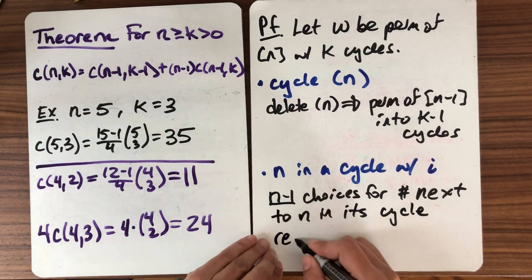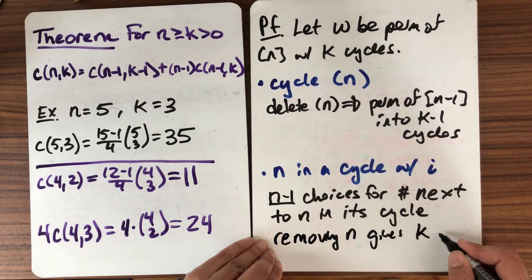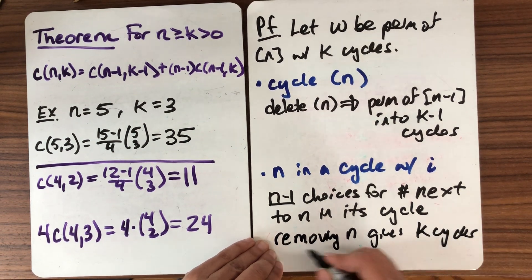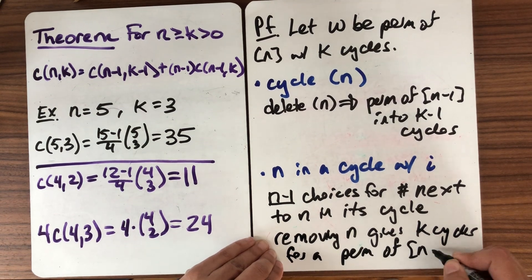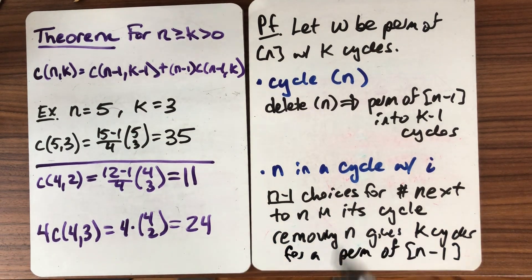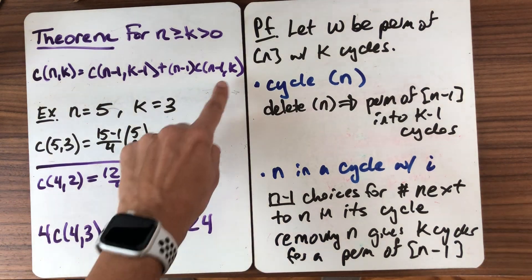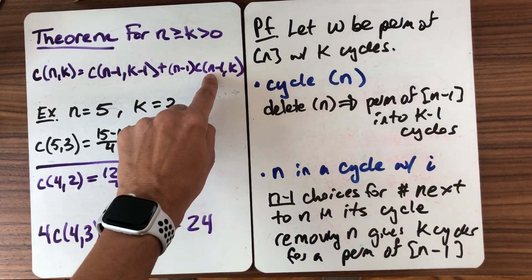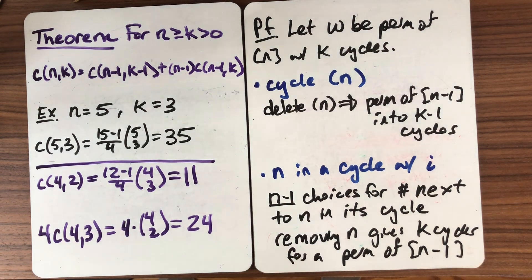Removing n gives k cycles for a permutation of n-1. So now we can delete n out of its cycle. We'll just sort of close that cycle up on itself, and now we have a permutation of n-1. We have not changed the number of cycles. We have changed the size, and there were n-1 choices for where n goes. So that gives us a proof for this recurrence relationship.